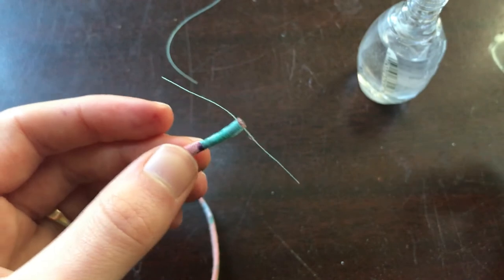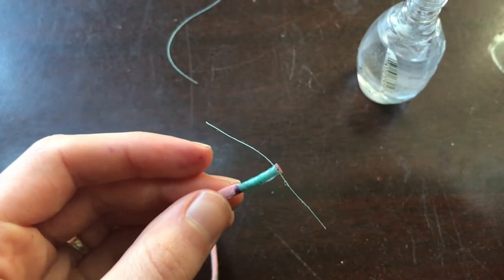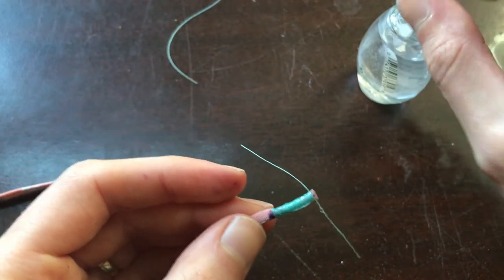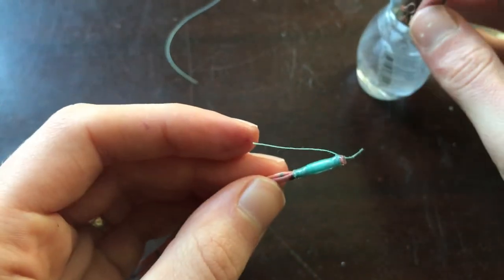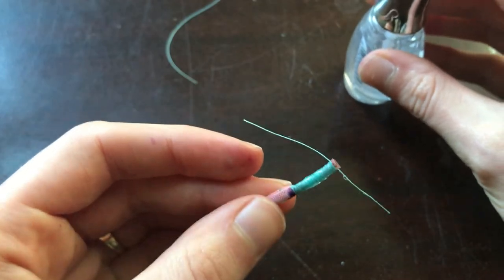Now I'm just going to set this off to the side to let it dry. Once it's totally dry, I can cut these tails off and then you can repeat this for your other shoelace.